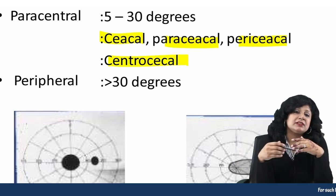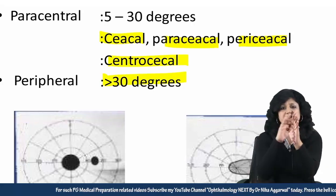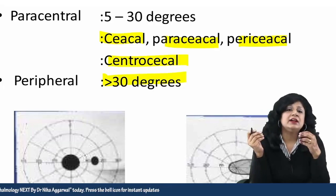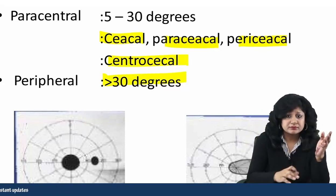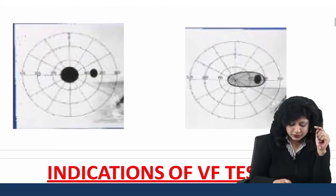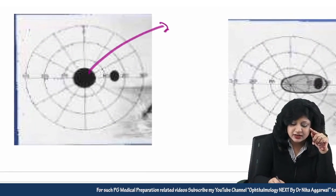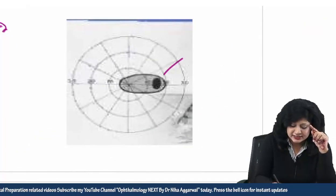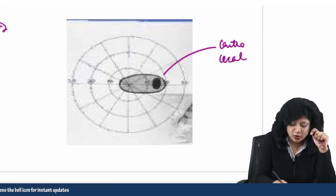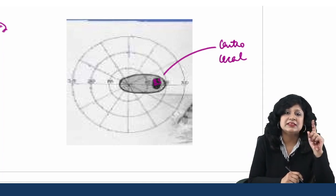After central — that means after 30 degrees — I will have the peripheral field, which is more than 30 degrees. You already know: central is up to 30 degrees and after that is peripheral. In the central, we have truly central and then paracentral. This is the central scotoma — the blackish area. This is your centrocecal scotoma — why? Because it is involving the blind spot. I hope you have understood the difference between central and centrocecal.